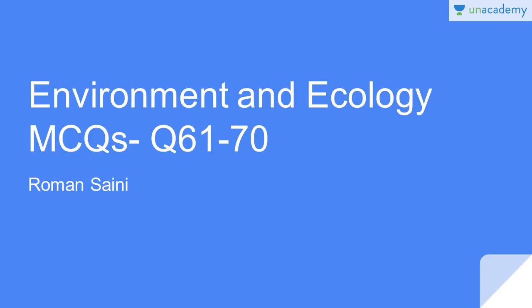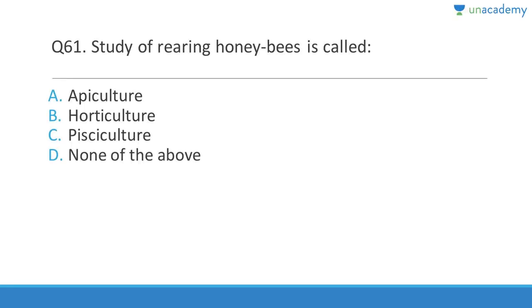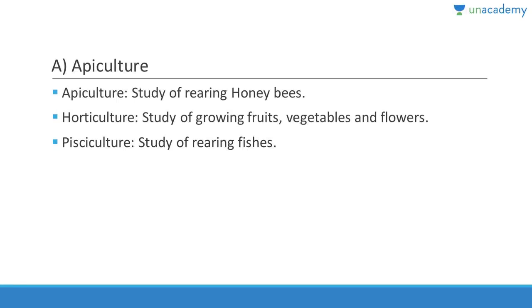Questions 61 to 70. Question 61: Study of rearing honeybees is called apiculture — there is no doubt about it. Horticulture is related to vegetables, fruits, and ornamental plants. Pisciculture is related to fishes — pisces is the term used for fishes. Apiculture is the study of rearing honeybees, horticulture is the cultivation of non-traditional crops like ornamental plants and fruits, and pisciculture is the study of rearing fishes.